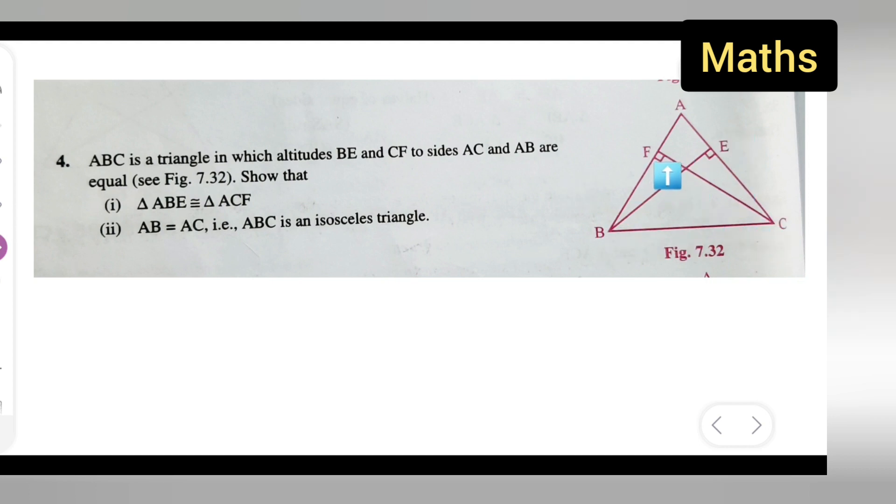So your BE and CF are equal, and sides AC and AB are equal. You'll have to show that triangle ABE and triangle ACF, these two triangles are equal.